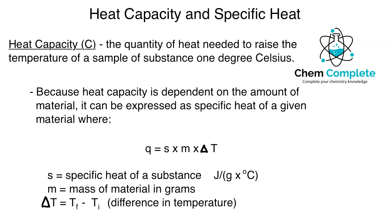We are going to look at what specific heat actually is. Given that heat capacity is the quantity of heat to raise the temperature of a sample of substance, that term sample of substance is not giving you an actual quantity. So what you need is something that can be standardized based on a per gram or per some amount. We do it on a per gram basis in chemistry. Because the heat capacity is dependent on the amount of material that's actually present, we express it as specific heat of a given material.